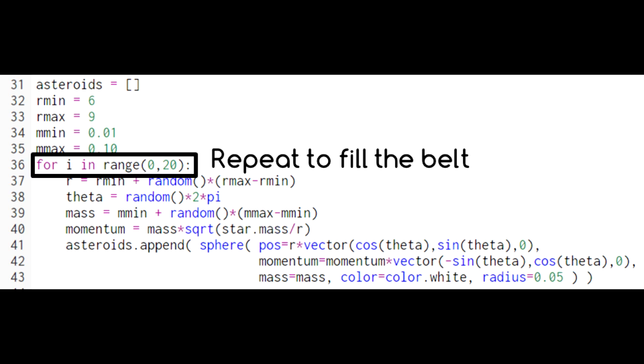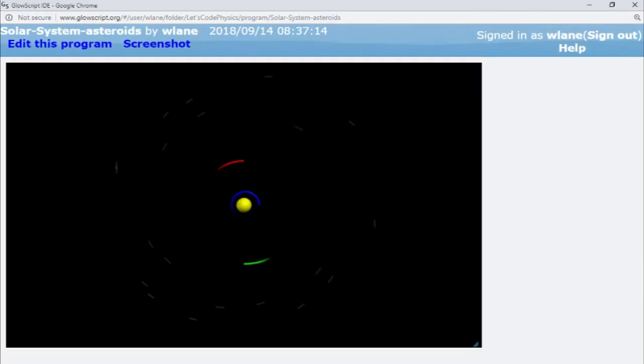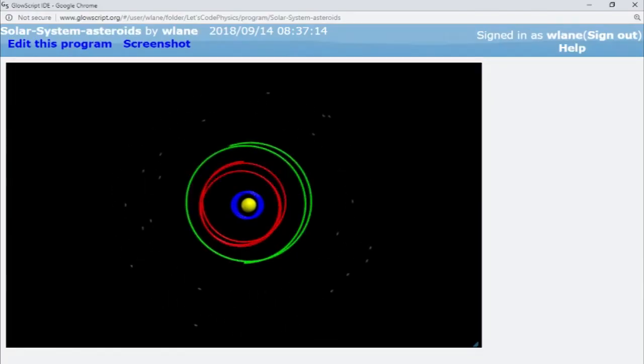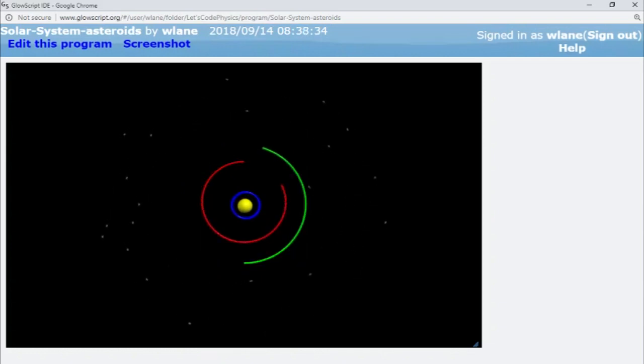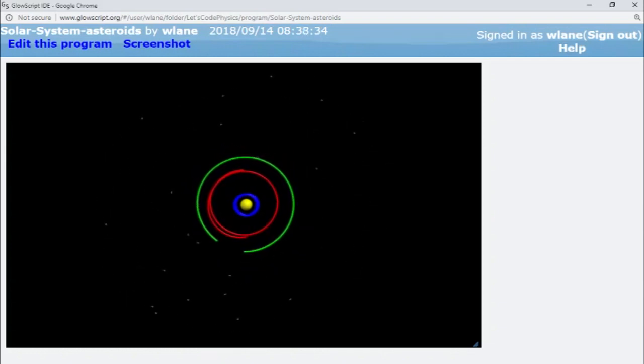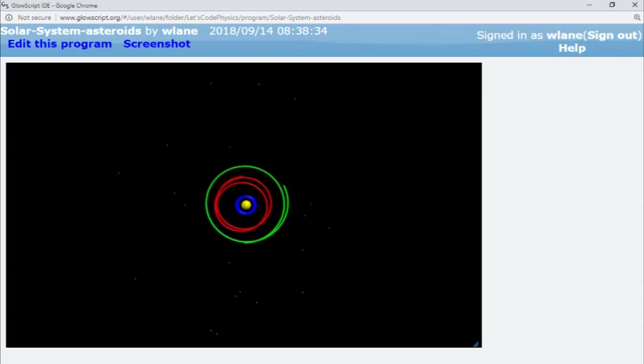We repeat this process for every asteroid we want to create, and the result is a nicely choreographed set of orbits in the asteroid belt. We can also introduce a little more variety to our asteroid belt by slightly adjusting the momentum, giving our asteroids a more elliptical orbit.